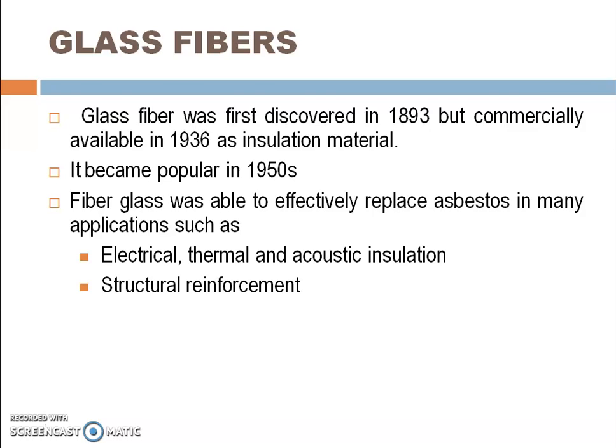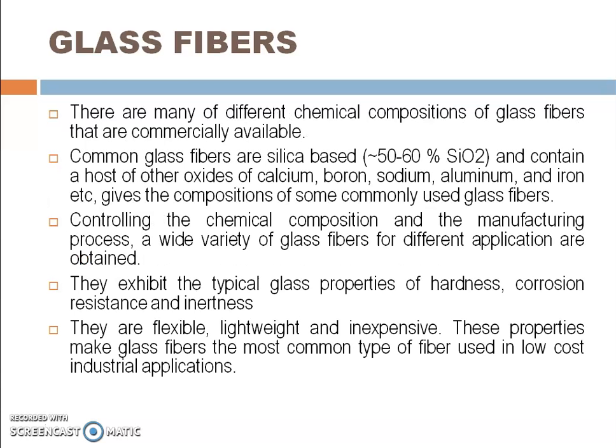Moving to inorganic fibers, glass fiber was discovered in 1893 but became commercially available in 1936 and popular in the 1950s. It was initially used to replace asbestos in applications such as electrical, thermal, and acoustic insulation, and structural reinforcement. The major component of glass fiber is silica, and it contains a host of other oxides including calcium, sodium, aluminum, and iron. By controlling the chemical composition, we can produce different types of glass fibers.